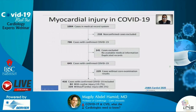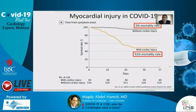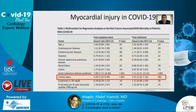A paper published in JAMA analyzed 416 patients with confirmed COVID-19. 82 patients had cardiac injury detected by elevated cardiac troponin, and more than 300 patients had no cardiac injury. The survival rate was significantly higher in patients without cardiac involvement — 51% mortality with cardiac involvement compared with 5% in patients without cardiac involvement. Multivariate Cox regression analysis confirmed that cardiac injury is a significant predictor of mortality, with a significant hazard ratio compared with other variables.